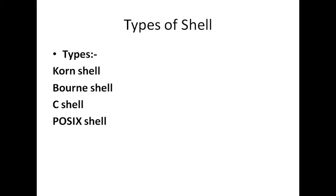Now when we talk about types of shell, there are four types: Korn shell, Bourne shell, C shell, and POSIX shell. Generally when we discuss types, we mostly focus on three: Korn shell, Bourne shell, and C shell.